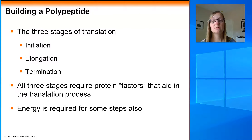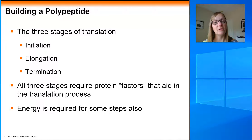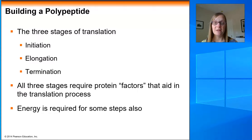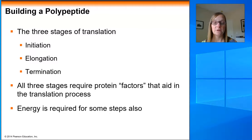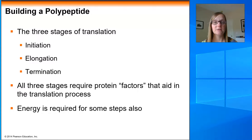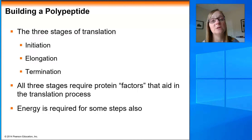Much like transcription, translation also has three stages: initiation — how you start the process; elongation — how you lengthen the polypeptide; and termination — how you shut the whole thing down. There are extra protein factors required at all three stages that make this process quite complex, but we'll keep it simple for now. Building a protein is an anabolic process requiring energy, so some steps involve energy expenditure.